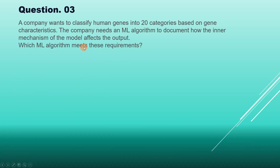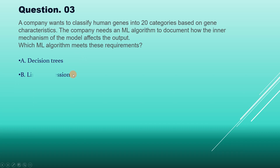Question 3: A company wants to classify human genes into 20 categories based on gene characteristics. The company needs an ML algorithm that documents how the inner mechanism of the model affects the output. Which ML algorithm meets these requirements? Options: A) Decision tree, B) Linear regression, C) Logistic regression, D) Neural network.